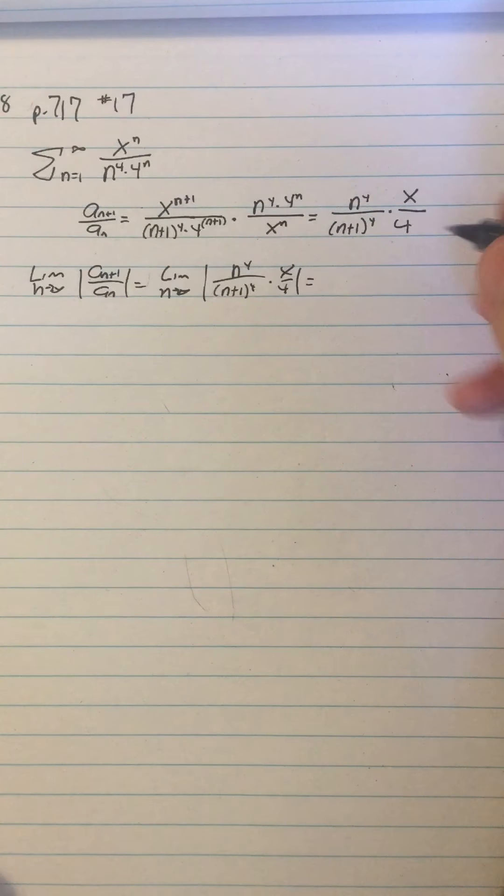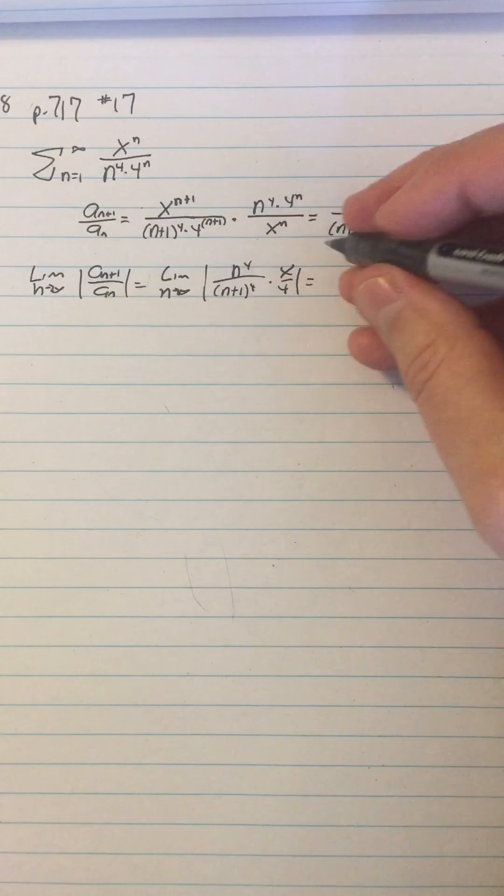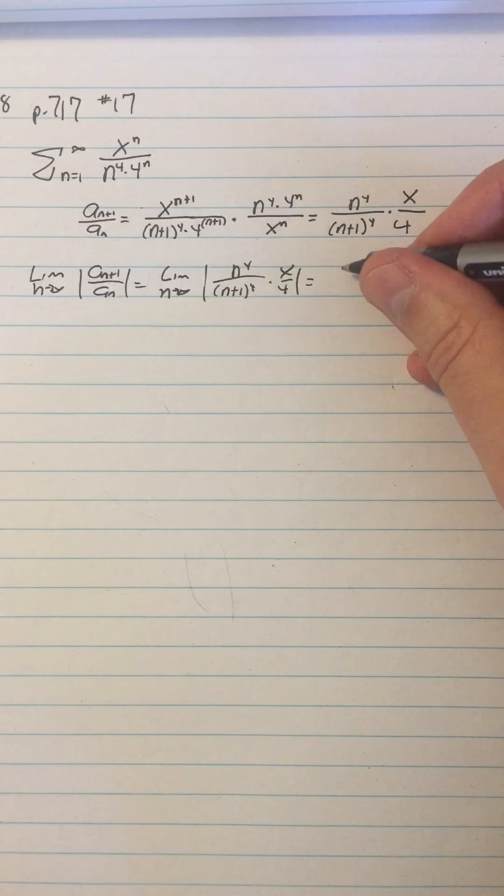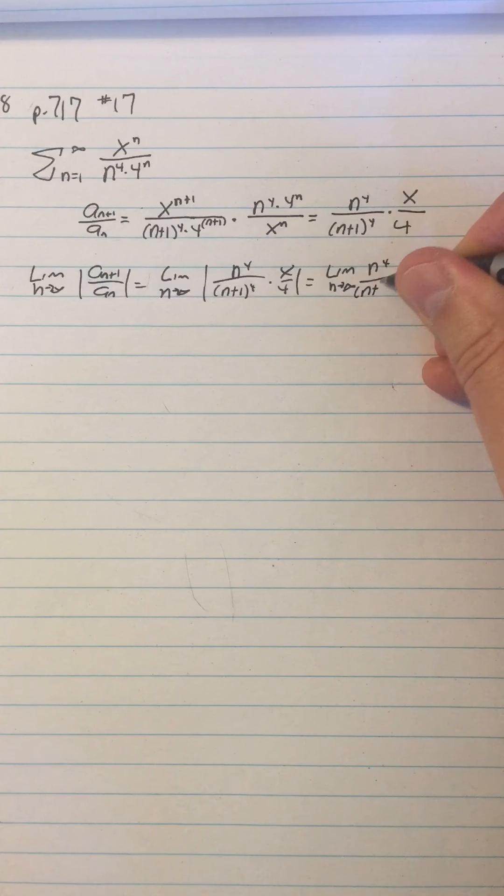And then I can split that limit up. The positive part is the n to the fourth over (n+1) to the fourth, so that equals the limit as n approaches infinity of n to the fourth over (n+1) to the fourth.